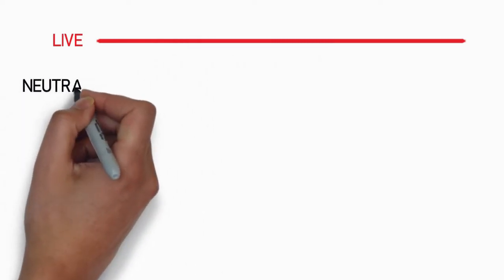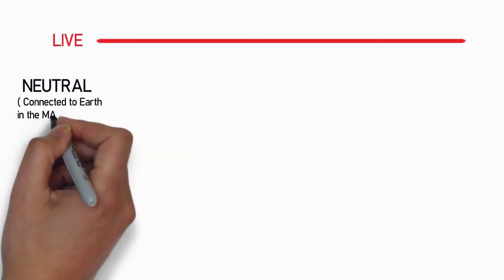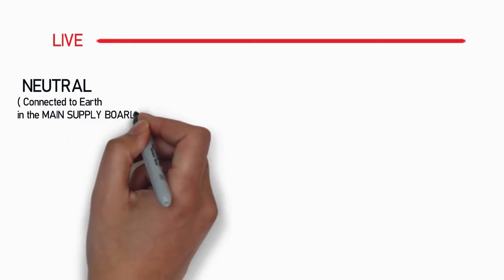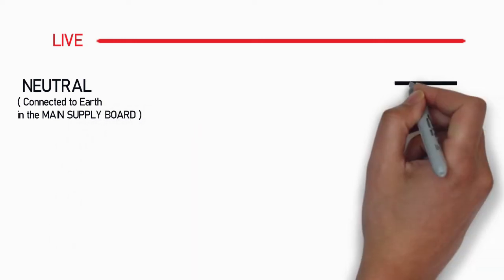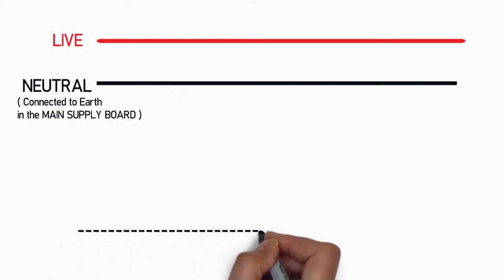As usual consider the two wires coming to a home live and neutral. Always remember that earth connection is not something provided by suppliers. It is an additional protective connection taken for each individual homes by placing a metallic plate inside the earth.